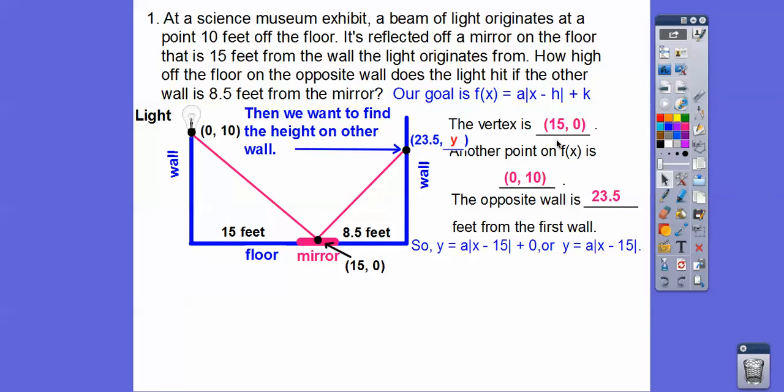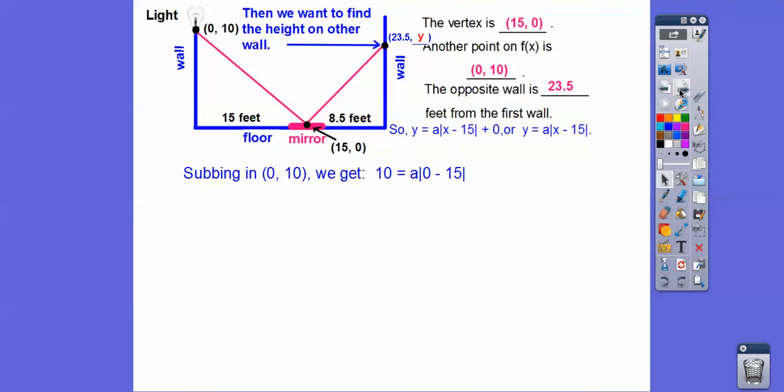So y equals a times x minus h plus k with the absolute value. So our vertex is at 15,0, so opposite, same. So here's our equation. Now from the last lesson, we can substitute this point in right here. 0 goes in for this x right here. And then this 10 is going to go in for that y right there. So let's go ahead and do that. And then when we solve, the absolute value, this is negative 15, but at the absolute value, it's positive 15, so we get 10 equals 15a. 10 equals 15a and divide by 15, and so we get 10 fifteenths, or two-thirds. Five goes into that two, five goes into that three times. There's a right there, two-thirds. So now we know that equation right there.